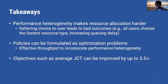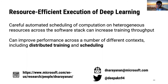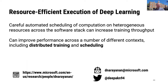Broad takeaways on scheduling: performance heterogeneity makes resource allocation much harder, and naive user decisions can lead to bad outcomes like everyone choosing the fastest resource type and increasing queuing delays. We show that formulating policies as optimization problems over effective throughput incorporates performance heterogeneity and improves objectives by up to 3.5×. Overall, careful automated scheduling of computation at both macro and micro levels can drastically increase training throughput and other objectives, demonstrated across both distributed training and scheduling contexts.